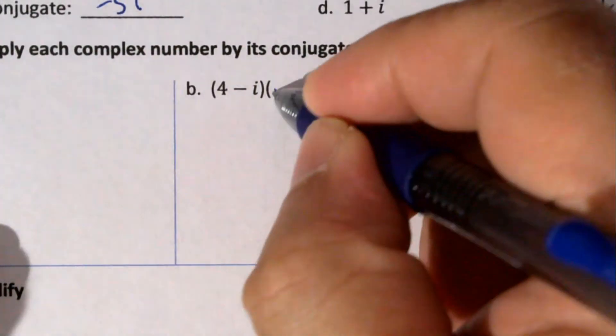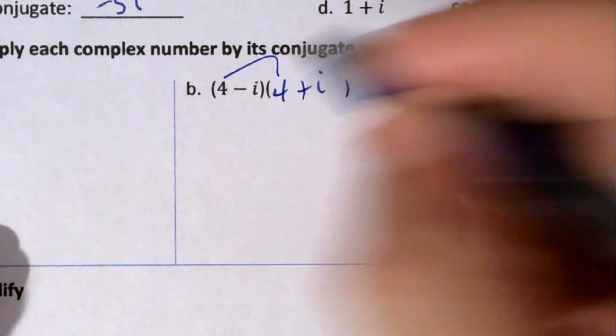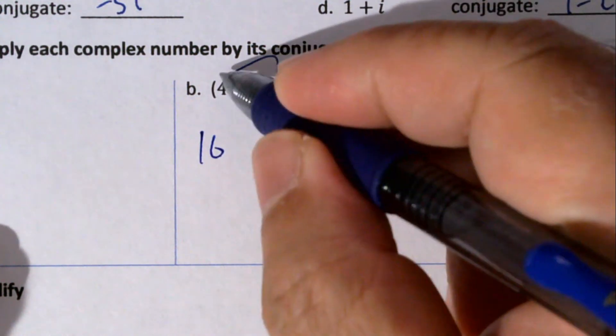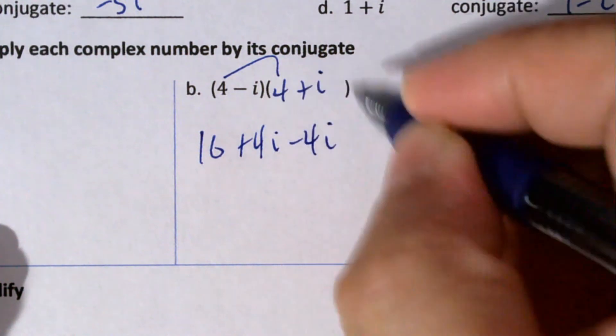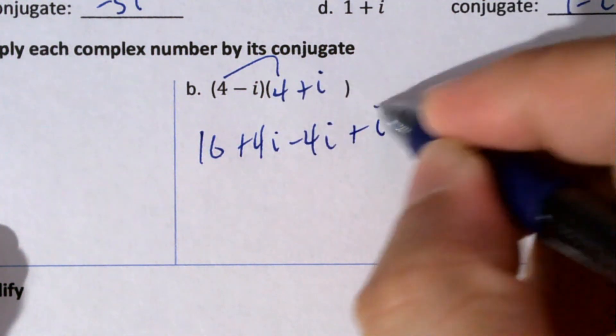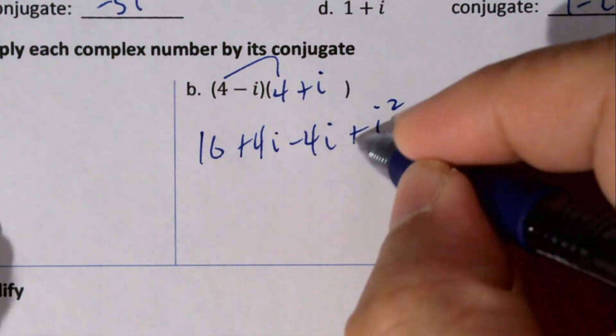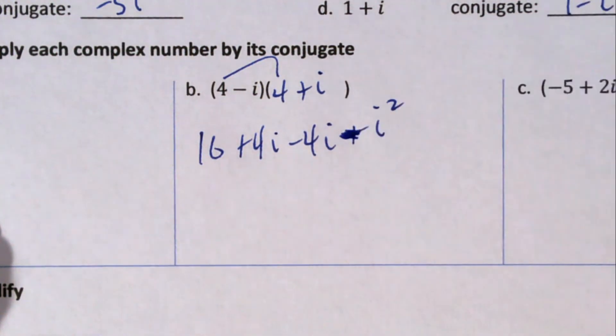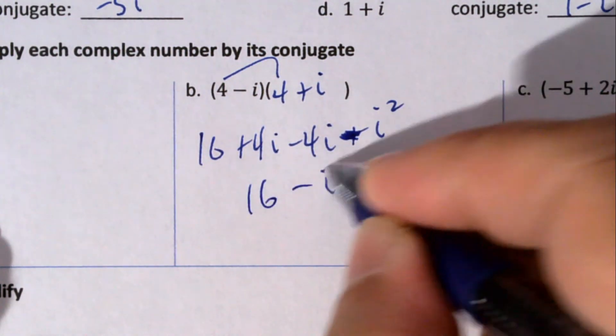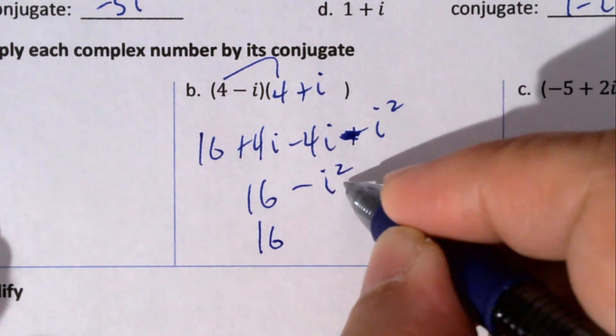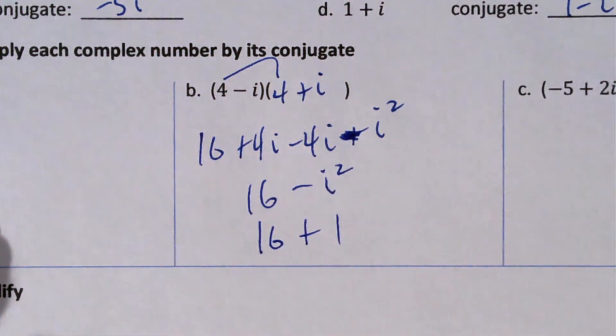4 - i times 4 + i. 4 times 4 is 16, 4 times i is +4i, and the inside is -4i, and the outside is plus i² - sorry, minus i² (mistake there). 4i's cancel, you get 16 - i². That minus i² turns into a +1, so it's 17.